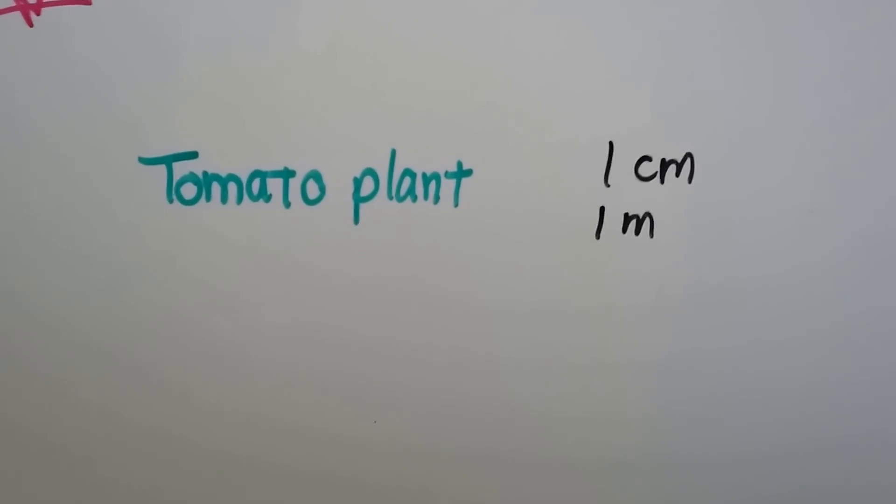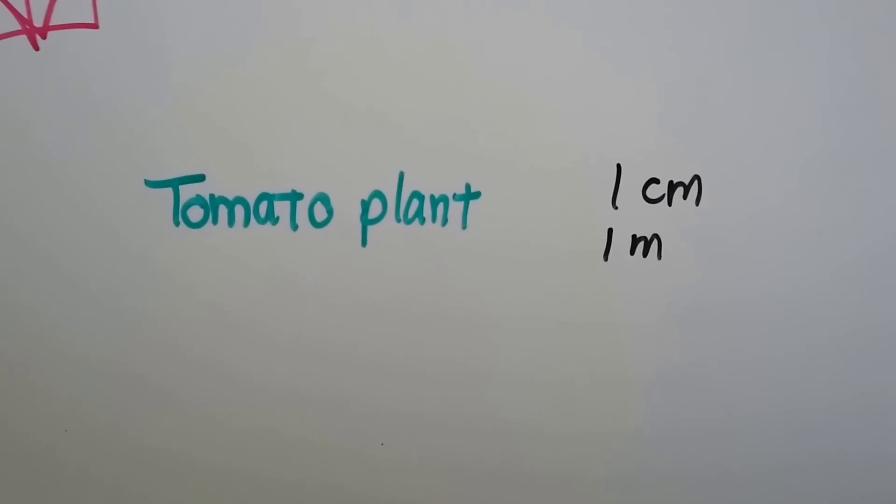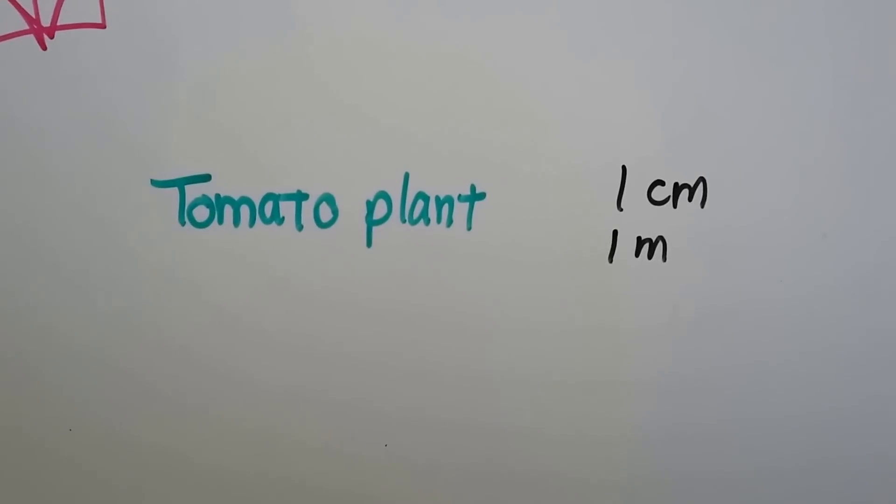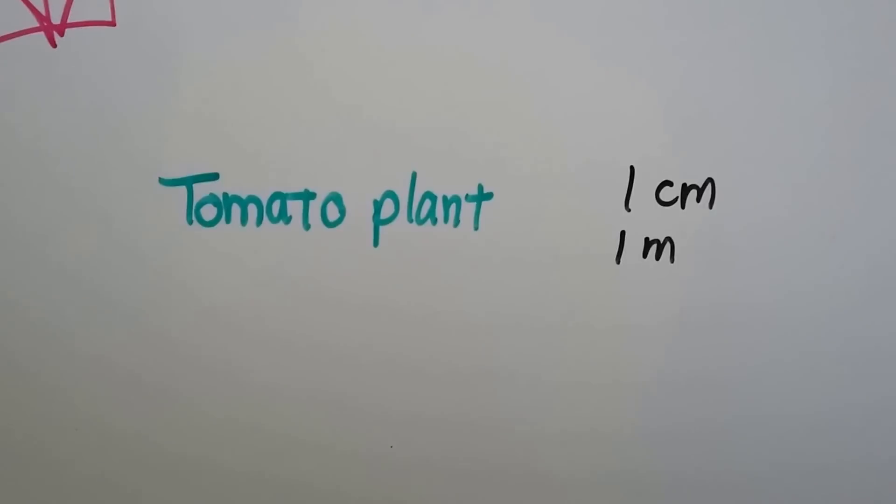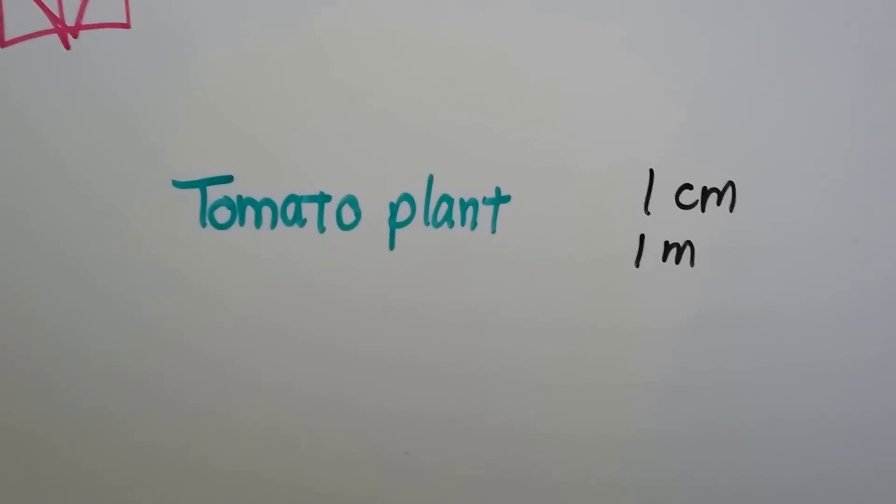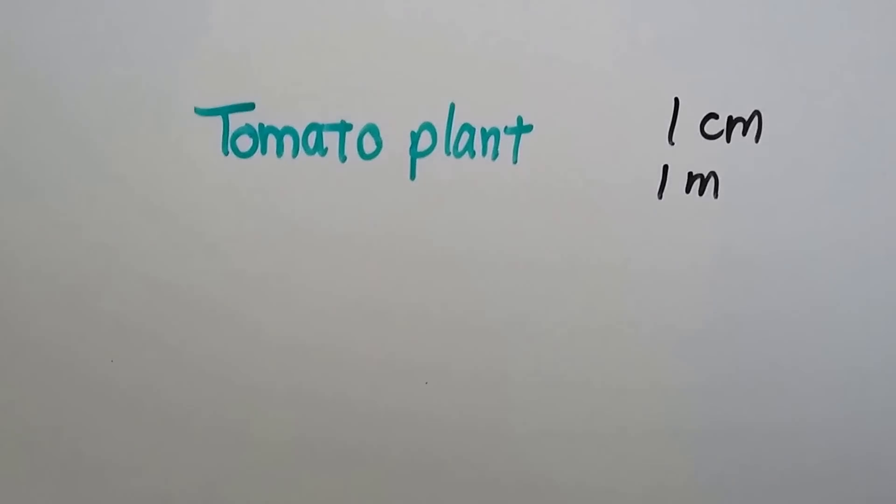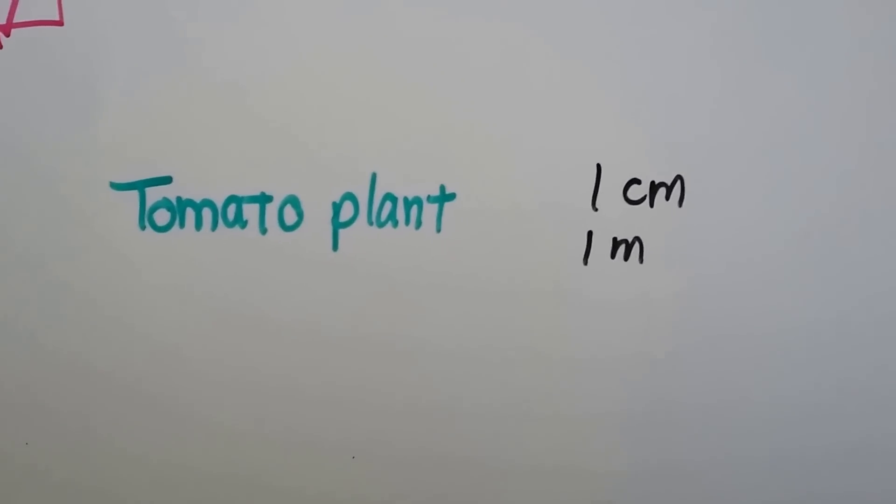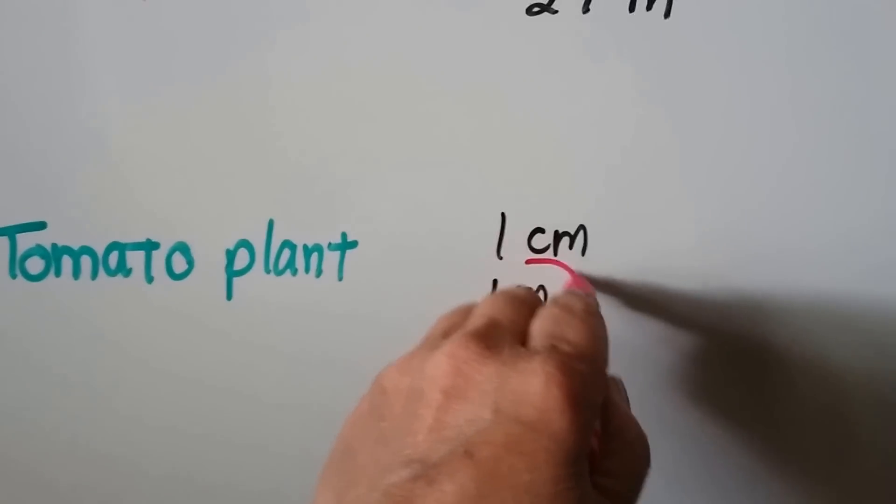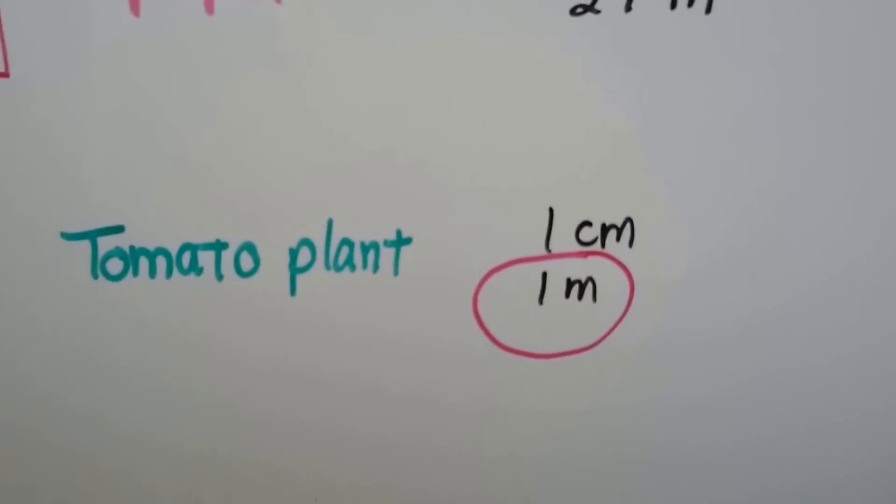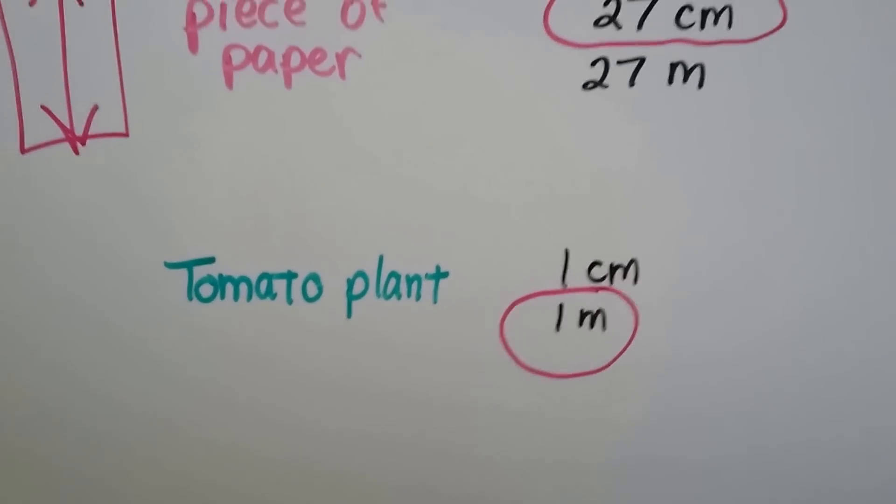Do you think a tomato plant would be about one centimeter or one meter? Have you ever grown tomatoes? Have you ever seen a tomato plant? Well, one centimeter would be about that big. That would be an awfully tiny plant. So no, it's not centimeters. If you said meter, you're right. A tomato plant would be about a meter tall.